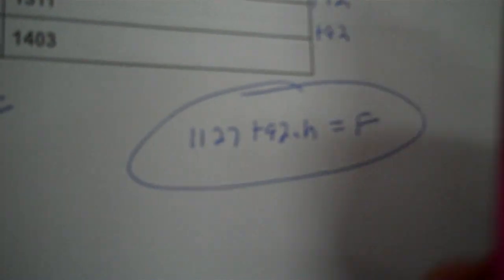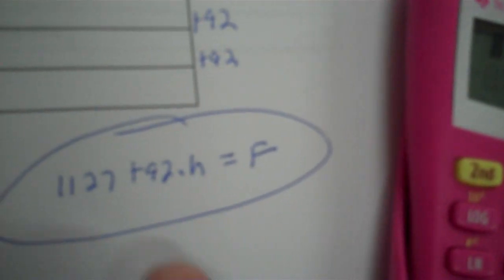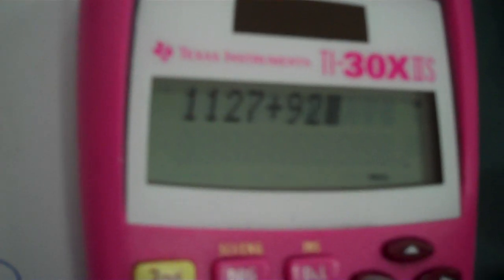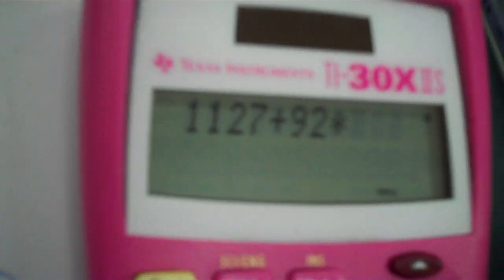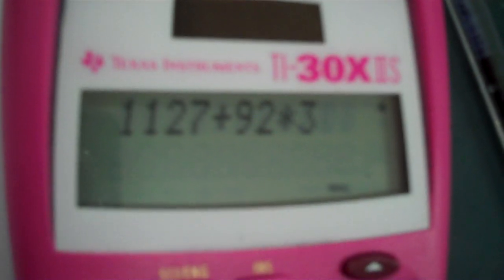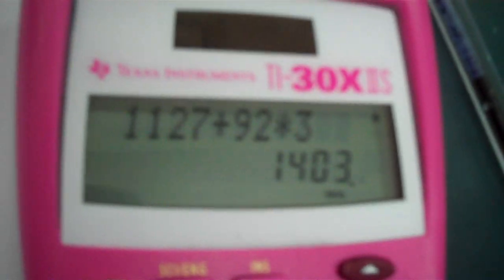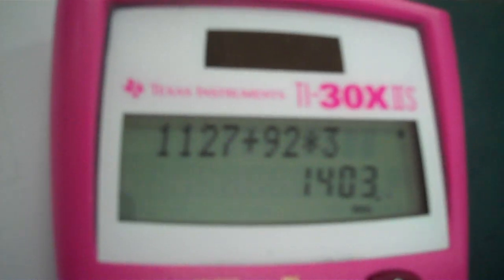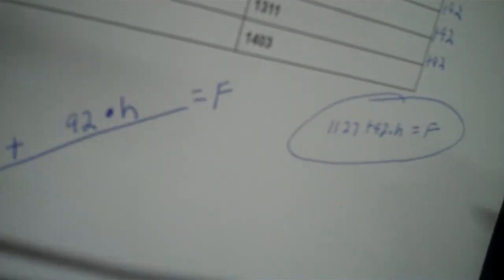So the equation is: f = 1,127 + 92 × h. To verify, enter 1,127 + 92 times a value from your table — let's pick h = 3. When you press equals it should give 1,403, and it does. Now let's move on to the graph.